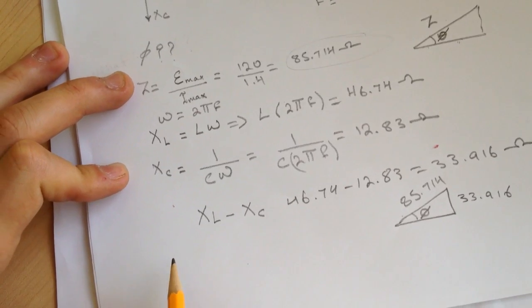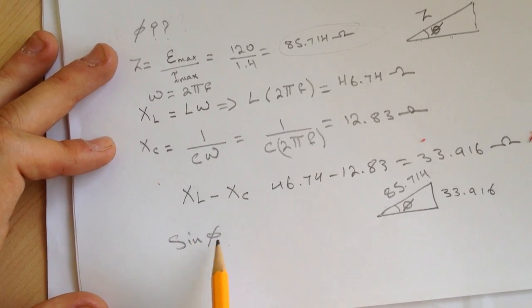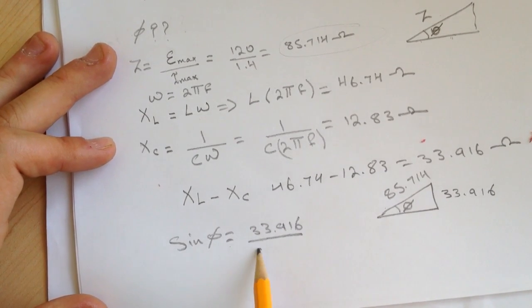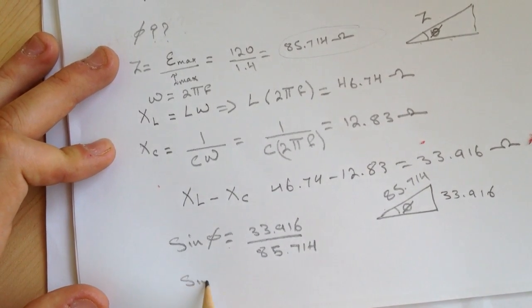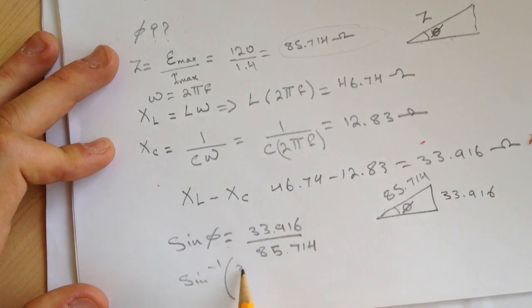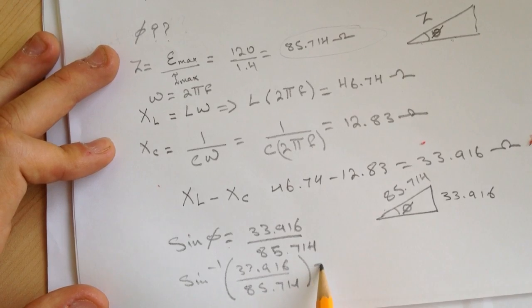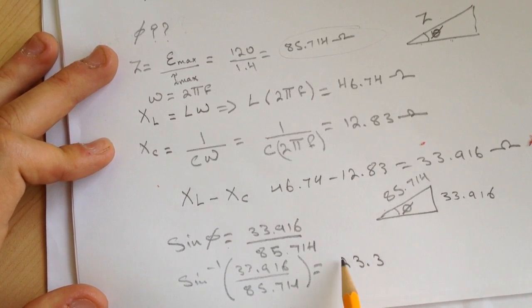So we can use the relationship that can connect both of these together. Sine phi equals 33.916 over 85.714. I take the sine inverse, and I got for this one 23.3 degrees.